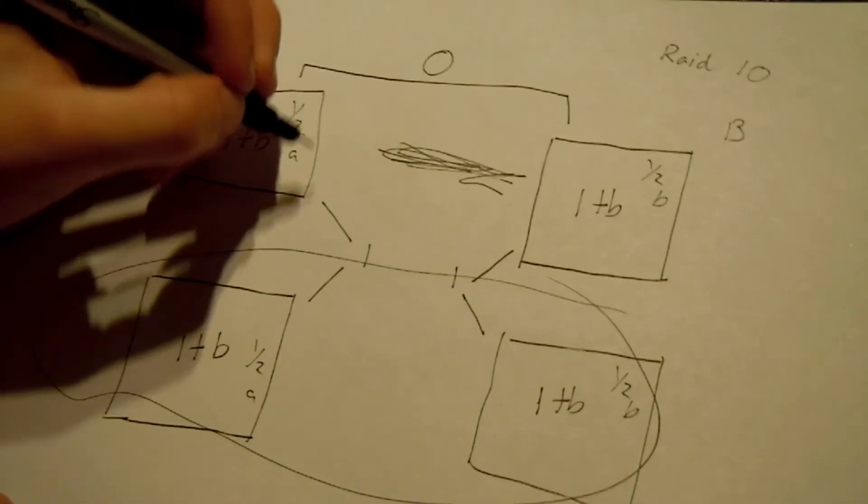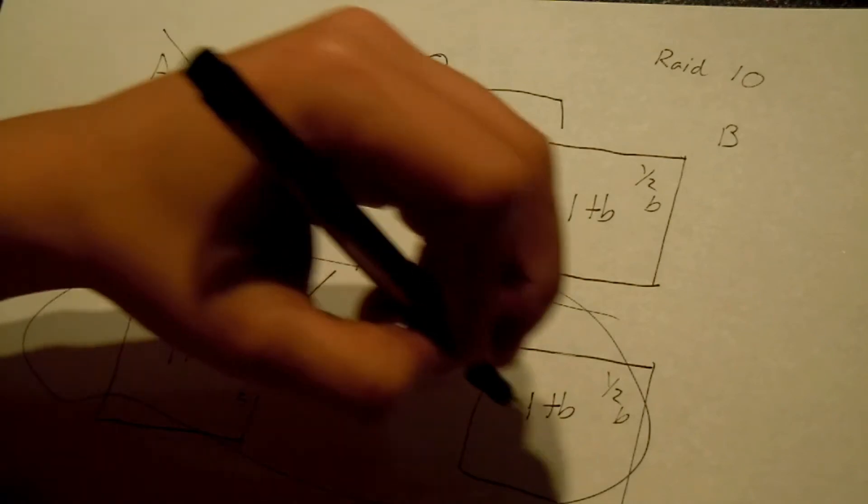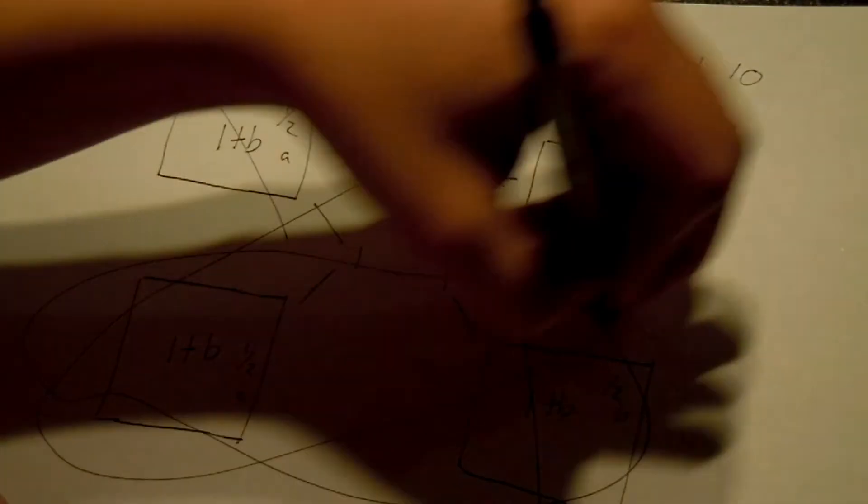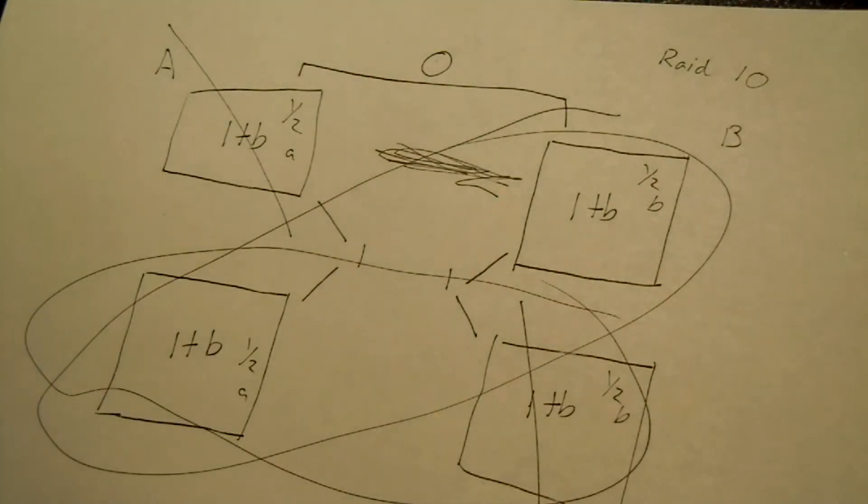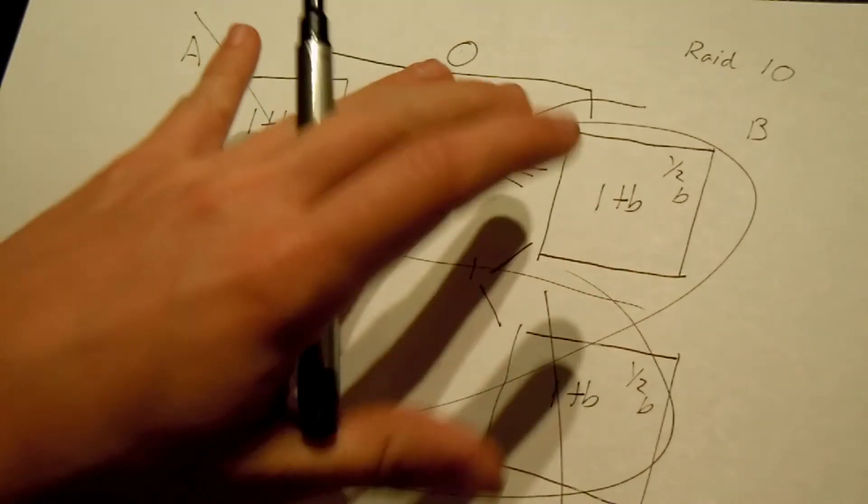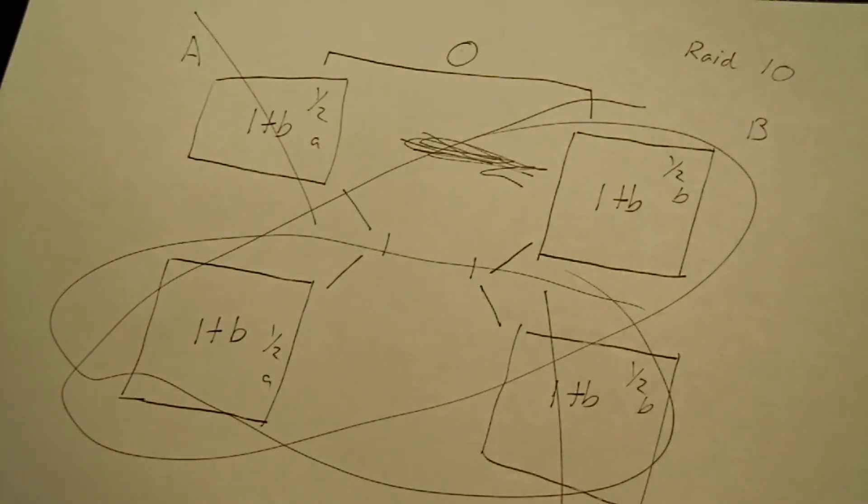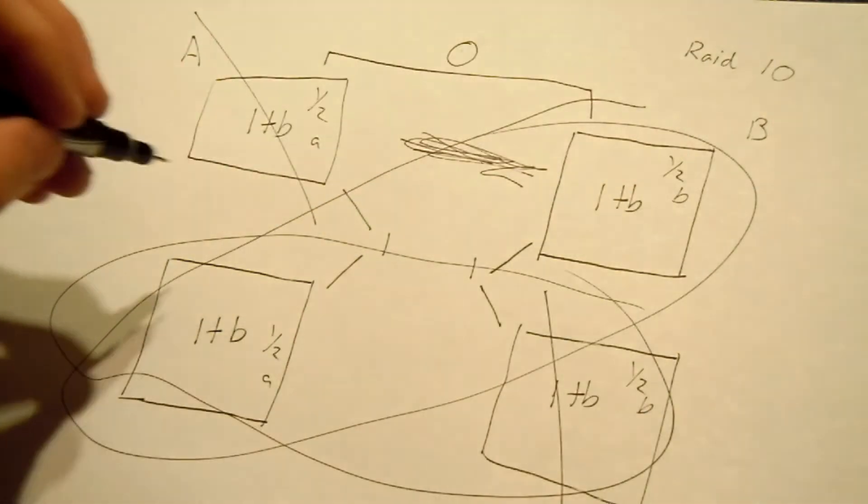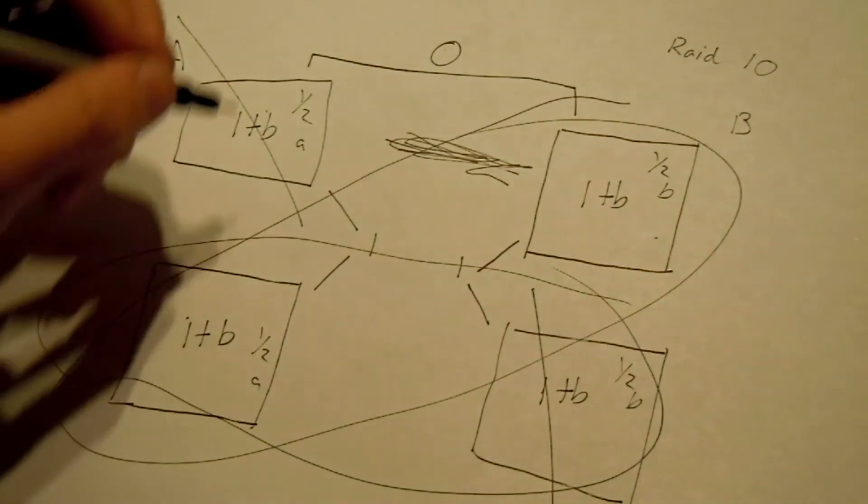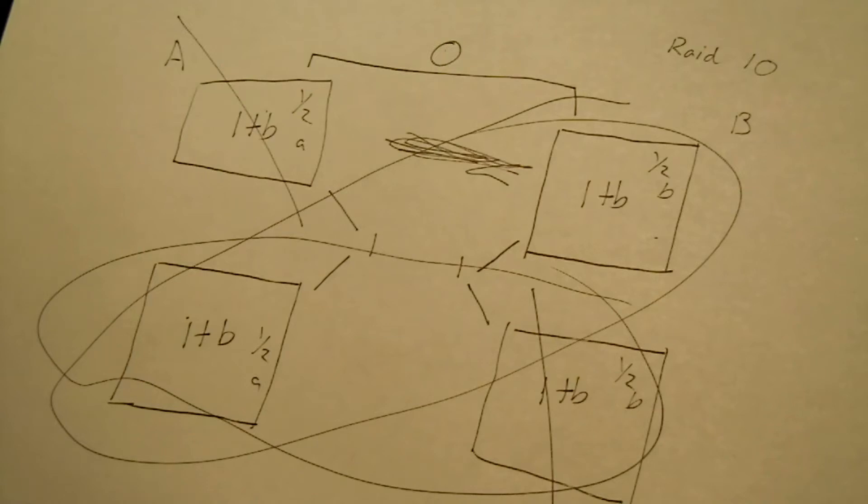Basically what you can do is you can lose one drive in each category and all your data will be saved because you still have the two other drives. Now it doesn't matter if they're both considered like the first half, because it's all mixed up, but that's basically what it is. Pretend you lost these two drives or these two drives. As long as you didn't lose these two which are in the same RAID 1, you'll be fine. But the only chance that you're going to lose both at once or all of them at once is something like a power surge and you don't have any surge protection.